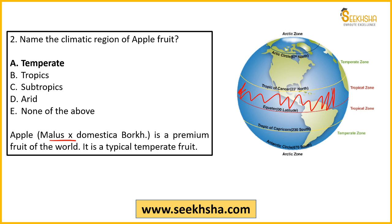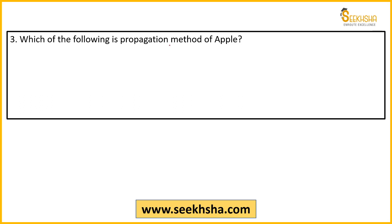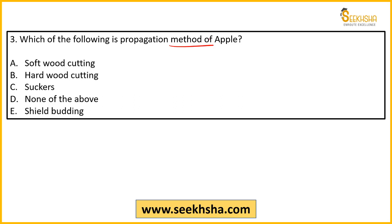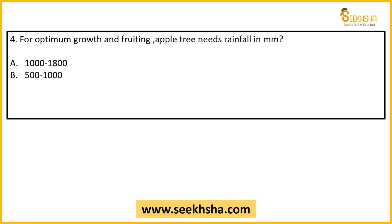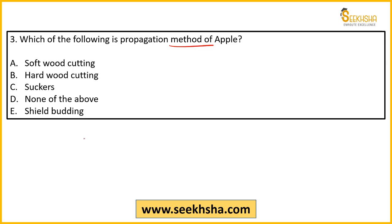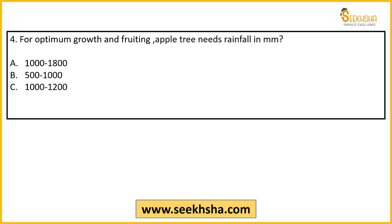Third question: Propagation method of apple — options are softwood cutting, hardwood cutting, suckers, none of the above, and shield budding. The correct answer for apple is shield budding. For optimum growth and fruiting, what should the rainfall be in mm? Options: 1000–1800, 500–1000, 1000–1200, 600–900, or 1200–1500 mm.